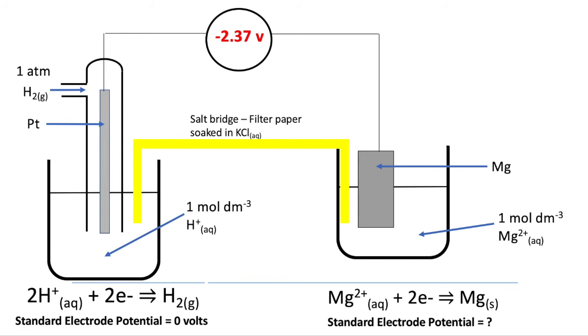And when we do that experiment, the volt meter has a reading of minus 2.37 volts. And therefore, the standard electrode potential of magnesium is minus 2.37 volts.